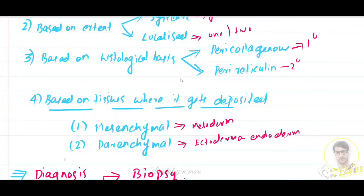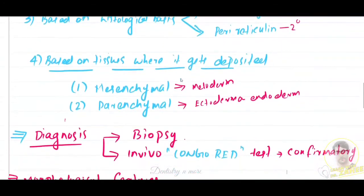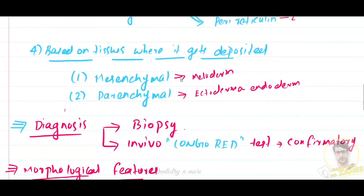How do we diagnose the condition? The first thing is biopsy examination. Biopsy examination is the commonest and confirmatory method for diagnosis in a suspected case of amyloidosis. Also, in vivo Congo red test can be a confirmatory test. There are other tests also like electrophoresis, immunoelectrophoresis, and bone marrow aspiration.